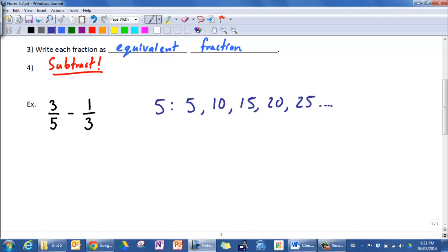My multiples for three are three, six, nine, twelve, fifteen, and as soon as I get to fifteen I can stop because I know that I've got a multiple in common.